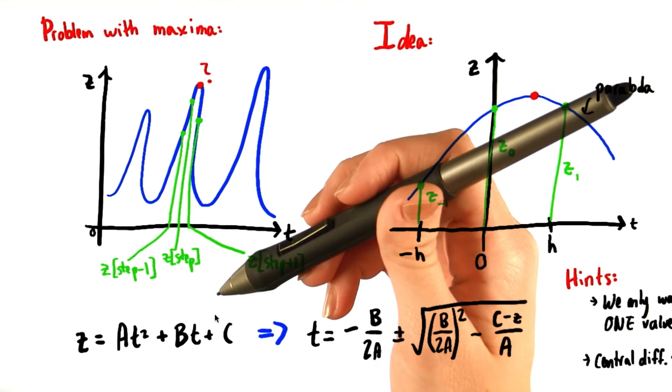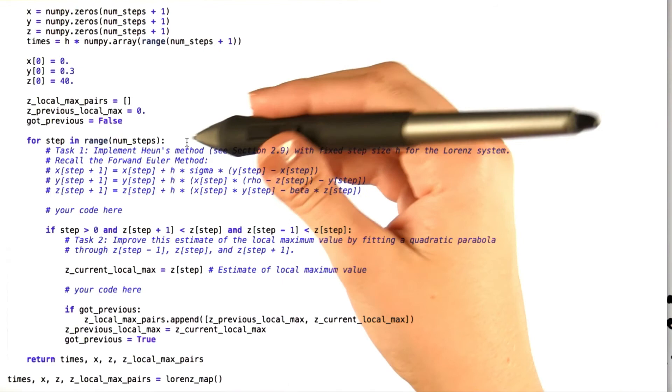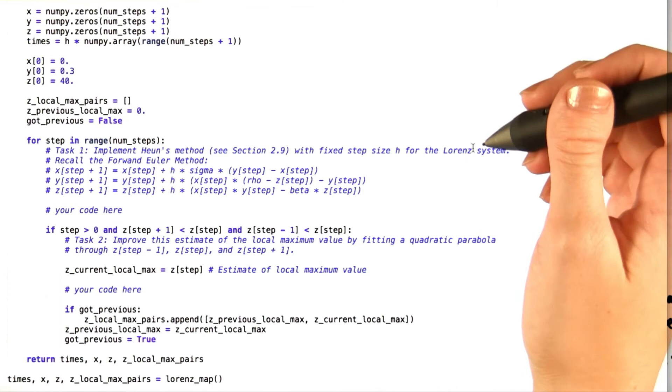Let's take a look at the code for a second. Now the first thing that we want you to do for this problem is to use Hoyne's method, which you remember from section 2.9, with a fixed step size, not a variable step size, for the Lorenz system. Remember that Hoyne's method depends on the forward Euler method, so we've included that for you right here.